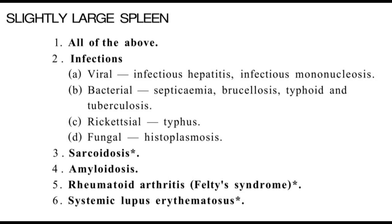Splenomegaly is a condition when on the ultrasound, the spleen enlarges more than 13 cm. From 13 to 15 cm, enlargement would be considered as slightly enlarged spleen, and a slightly enlarged spleen could be because of infections.